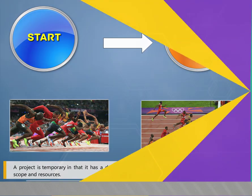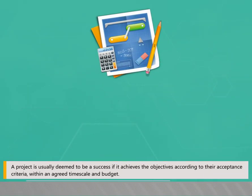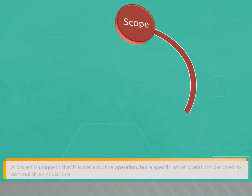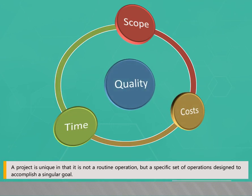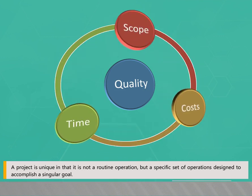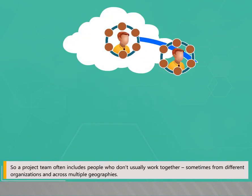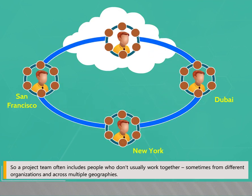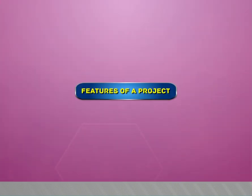A project is usually deemed to be a success if it achieves the objectives according to their acceptance criteria within an agreed time scale and budget. A project is unique in that it is not a routine operation but a specific set of operations designed to accomplish a singular goal. A project team often includes people who don't usually work together, sometimes from different organizations and across multiple geographies.